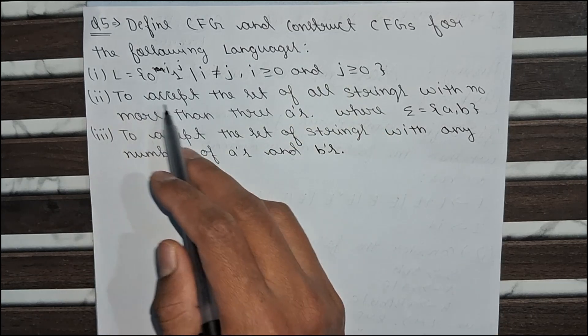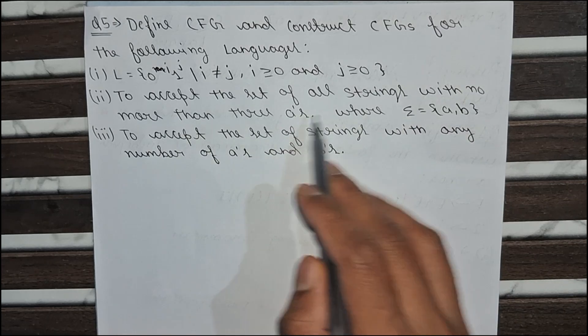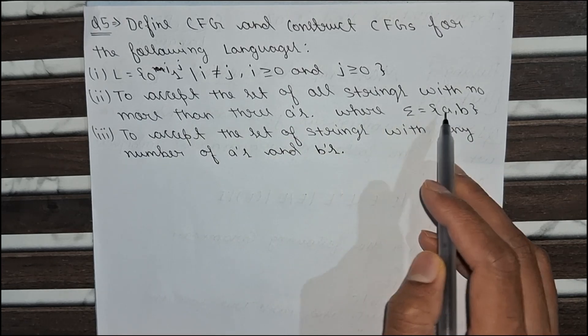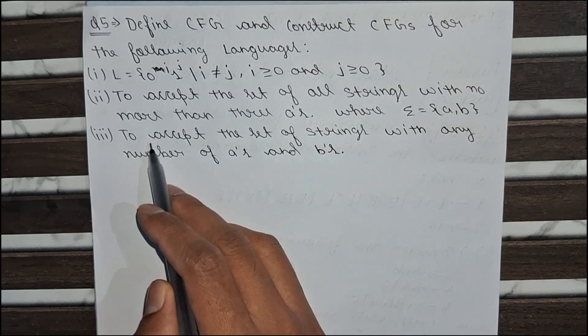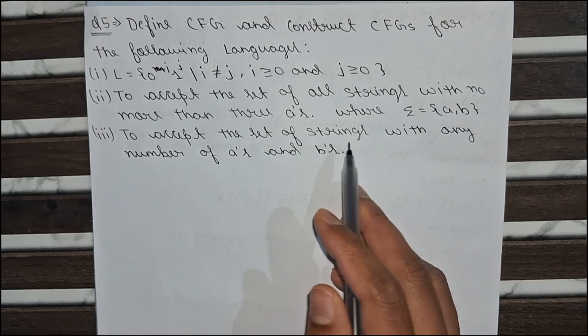Second language given here is to accept the set of all strings with no more than three A's where alphabets are A comma B. The third language given here is to accept the set of strings with any number of A's and B's.